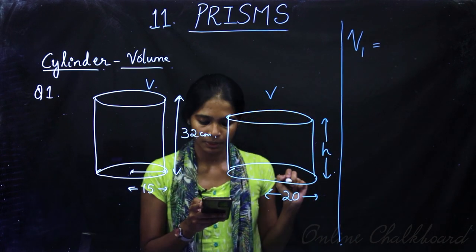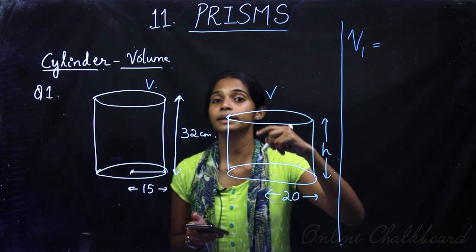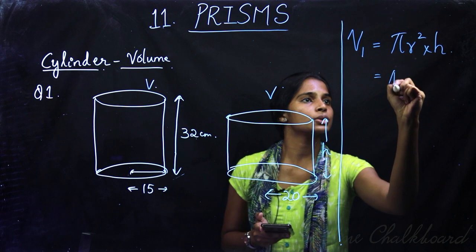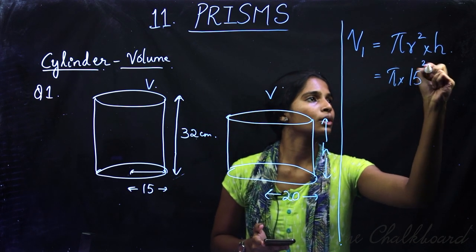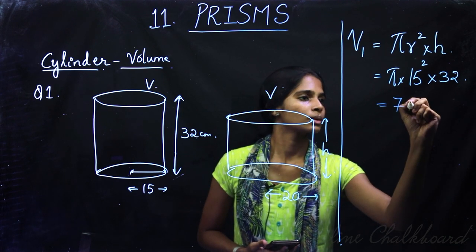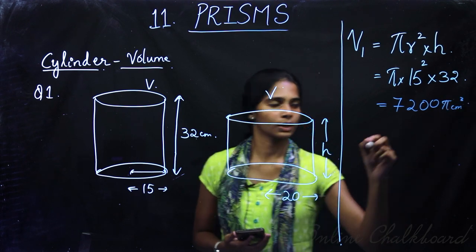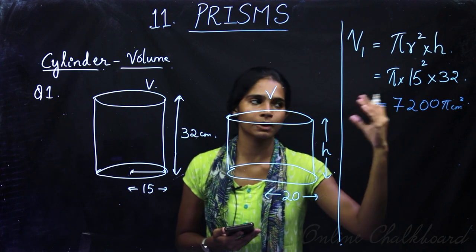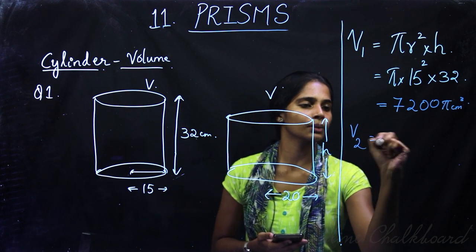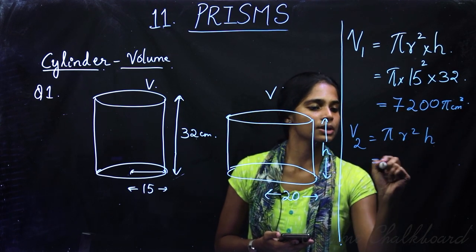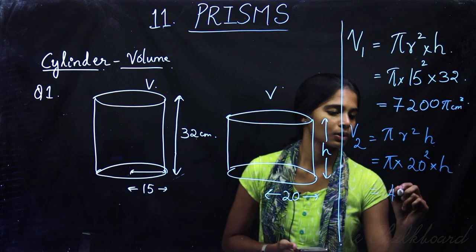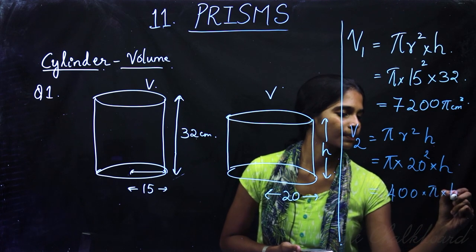Now for the second cylinder, V2 equals πr²h. The radius is 20 cm, so V2 equals π into 20 squared into h, which equals 400πh. We leave h as unknown here.